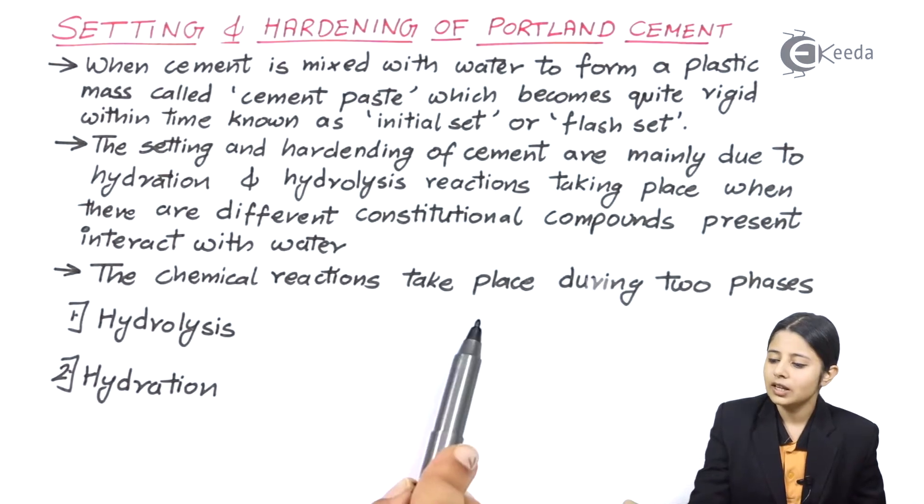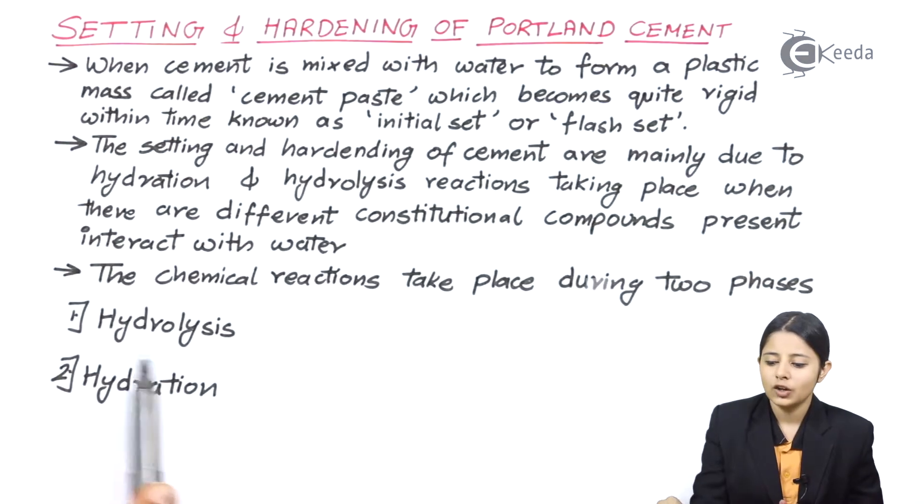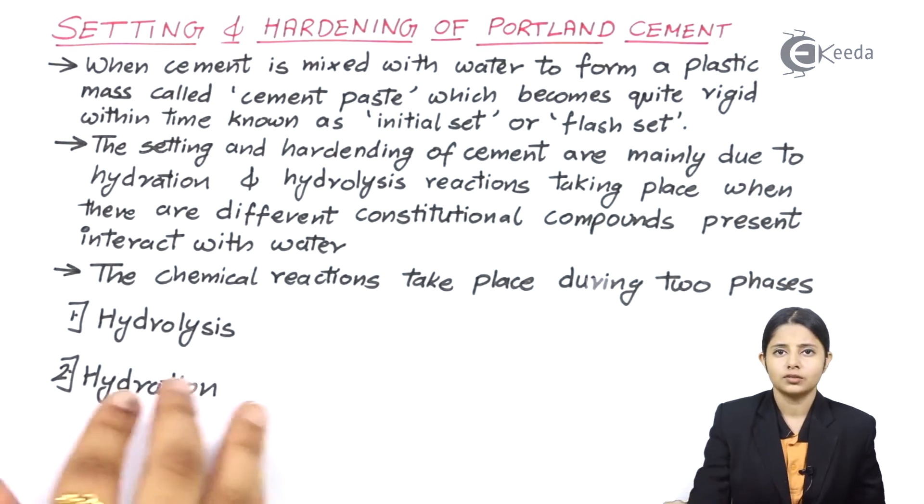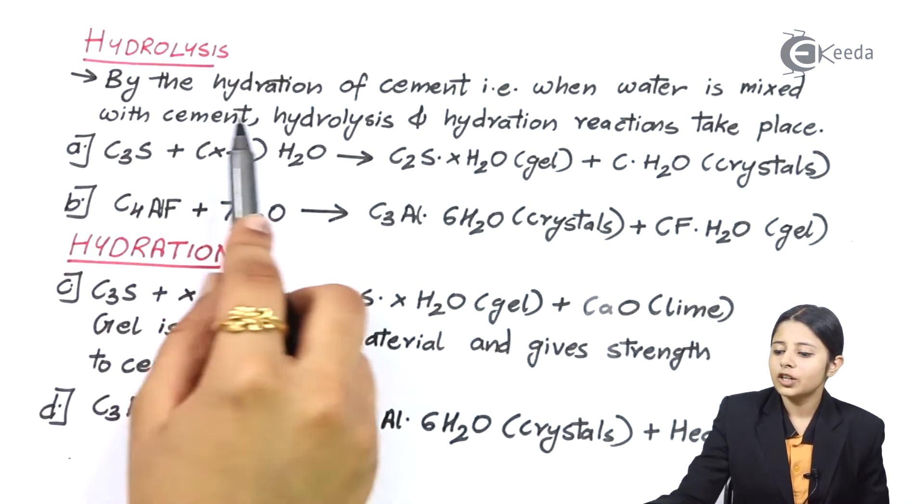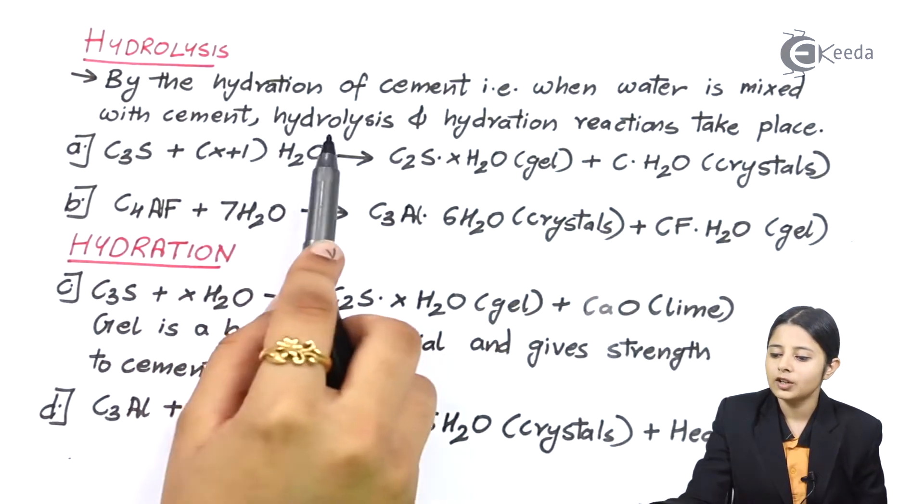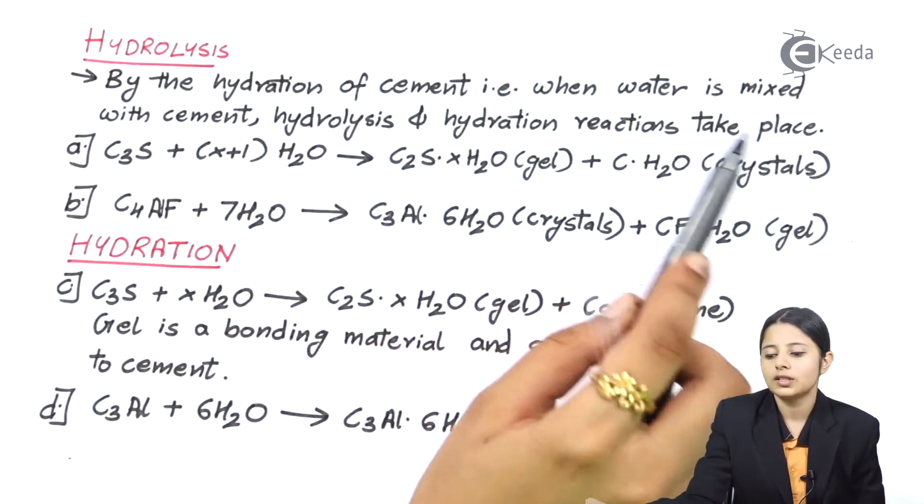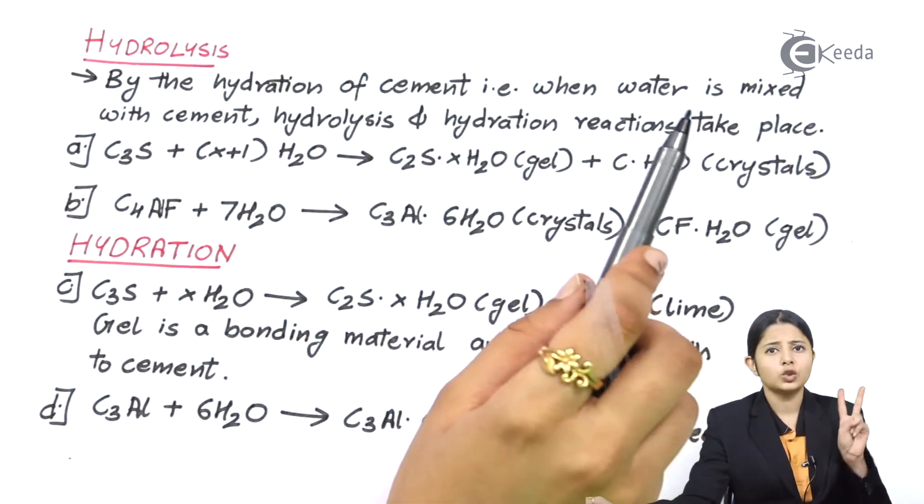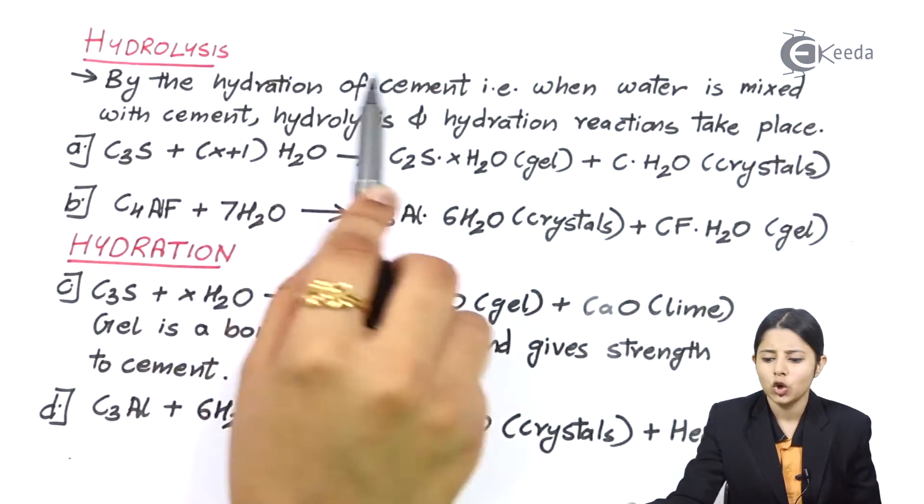The chemical reactions take place during two phases: hydrolysis and hydration. We will go through both reactions. By the hydration of cement, when water is mixed, hydrolysis and hydration reactions take place. Let us first see the two main reactions for hydrolysis.